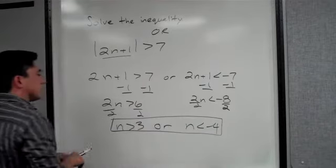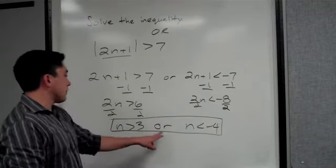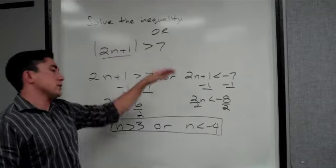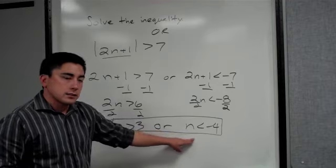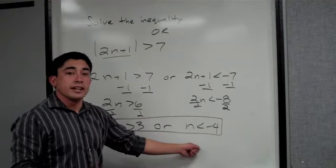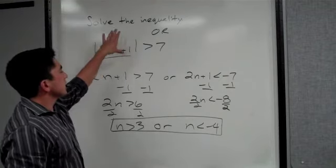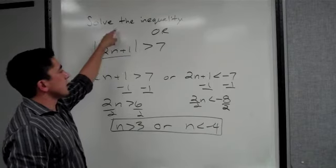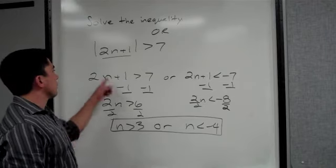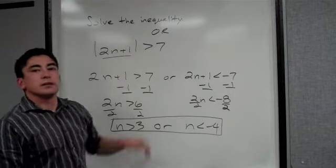Let's think about this again. If you pick a number that's in between 3 and negative 4, it won't work. So if I plug in 0, I get 0 plus 1 is 1, absolute value of that is not greater than 7. So as n gets smaller and smaller past negative 4, this starts to be true. If I were to choose negative 5, that would give me negative 10 plus 1 is negative 9, absolute value of negative 9 is positive 9, which is greater than 7. Same thing here. If I choose a number greater than 3, like 4, 4 times 2 is 8, plus 1 is 9, absolute value is greater than 7.